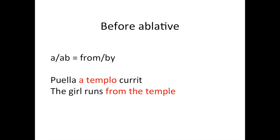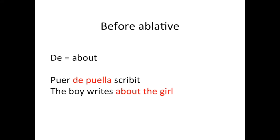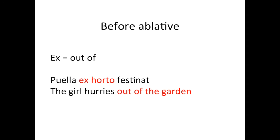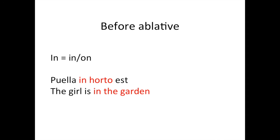For the ablative prepositions — the prepositions that follow the ablative case — there is 'a' or 'ab,' which means 'from' or 'by.' For example: 'puella a templo currit,' which means 'the girl runs from the temple.' 'Cum' means 'with': 'puer puella cantat,' the boy sings with the girl. 'De' means 'about': 'puer de puella scribit,' the boy writes about the girl. 'Ex' means 'out of': 'puella ex horto festinat,' the girl hurries out of the garden. And 'in' with the ablative means 'in' or 'on': 'puella in horto est,' the girl is in the garden.